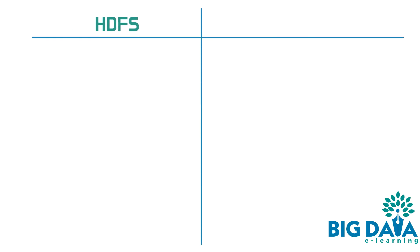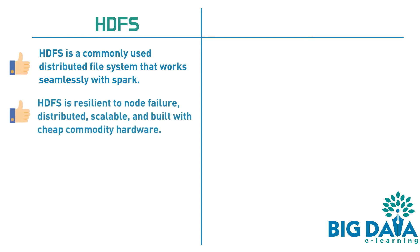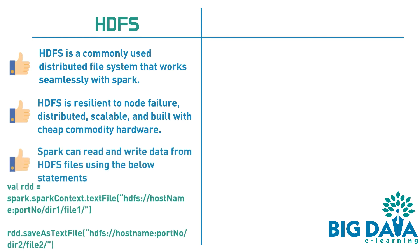HDFS is a commonly used distributed file system that works seamlessly with Spark. HDFS is resilient to node failure, distributed, scalable, and built with cheap commodity hardware. Spark can read and write data from HDFS files easily using the below statements.